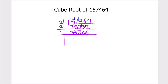Again we are going to divide it by 2. 2 times 1 is 2, 1 is remainder, this becomes 19. 2 times 9 is 18, 1 is remainder, this becomes 19. 2 times 9 is 18, 1 is remainder, this becomes 16. 2 times 8 is 16 and 2 times 3 is 6.